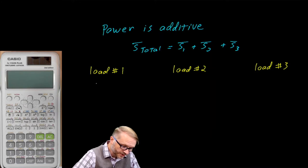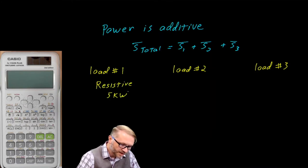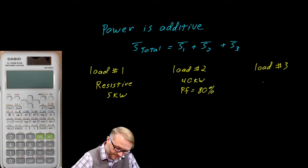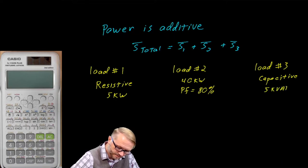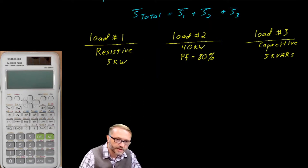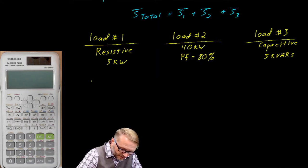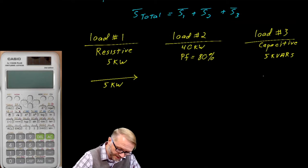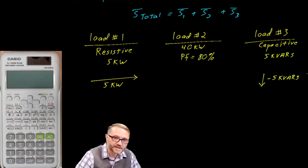We'll let the first one be pure resistive at 5 kilowatts. The second load is 40 kW with a power factor of 80%. And the third load is pure capacitive, and that will give us 5 kVars capacitive. Before you do the calculation, I would encourage you to present the power triangle for each load. The resistor is very easy — it's 5 kilowatts, all real. The capacitor is very easy because it's negative 5 kVars — it's all imaginary.